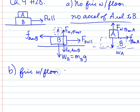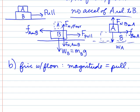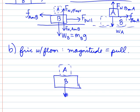Now in part B, it's a little bit different. We're told that there's friction with the floor, and the friction with the floor has the same magnitude equal to the force of the pole. So that's very important. Let's start with B again. So here's B, and here's A. And many of the forces will be the same. We'll have the weight of B, we're going to have the normal force of A acting on B, and we're going to have the normal force from the floor pushing up.